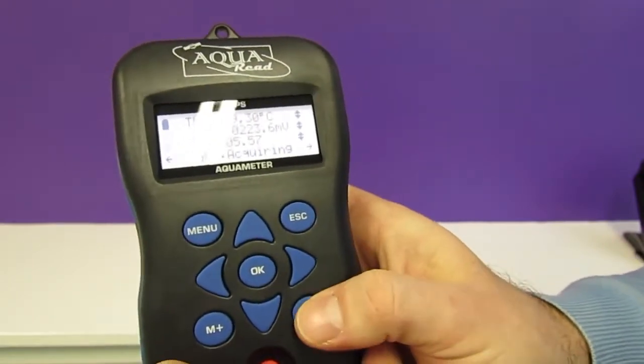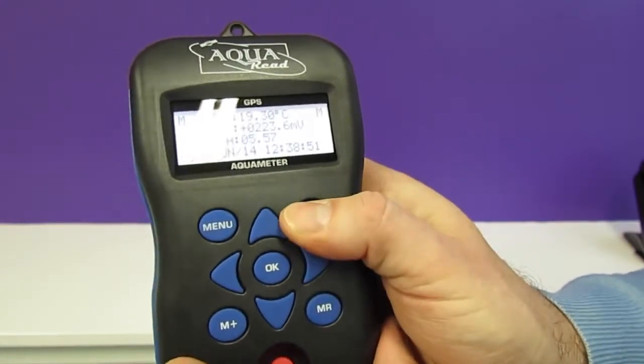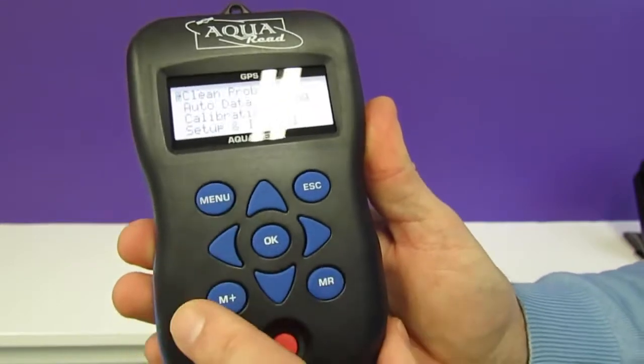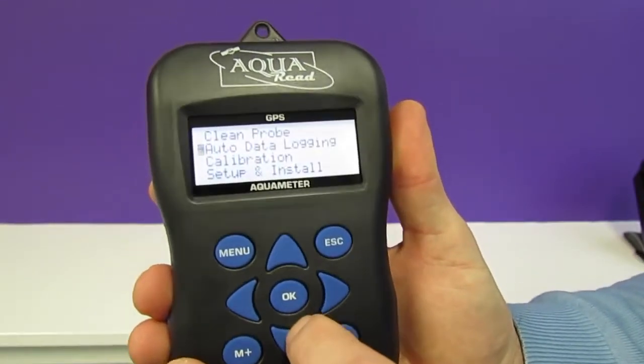We can press the memory recall button to view that data. The menu opens up a simple set of options which allow you to set up things like auto data logging.